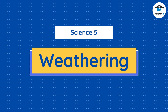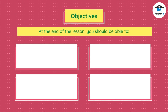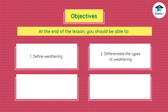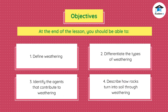SCIENCE 5: WEATHERING. Objectives — at the end of the lesson, you should be able to: define weathering, differentiate the types of weathering, identify the agents that contribute to weathering, and describe how rocks turn into soil through weathering.